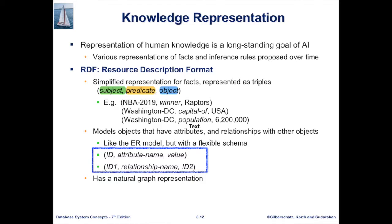We want to connect our idea of data modeling with the ER model to RDF. An ER model can also have an RDF-type structure. The triples will have two categories: the first is to assign a value to a particular ID — the triple is (ID, attribute name, value). The second is to specify a relationship between two entities with primary keys, (ID1, relationship, ID2). The RDF has a natural graph representation where the triples are the edge list and the nodes are the subject and the object.